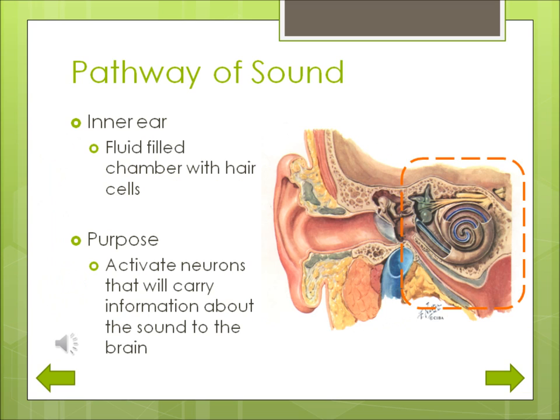The inner ear is filled with fluid and contains thousands of tiny hair cells. Vibrations from the middle ear cause the fluid to move. The motion of the fluid deflects tiny hairs back and forth on top of each cell. When the hair cells are activated in this way, a chemical neurotransmitter is released that activates neurons attached to the bottom of each hair cell.